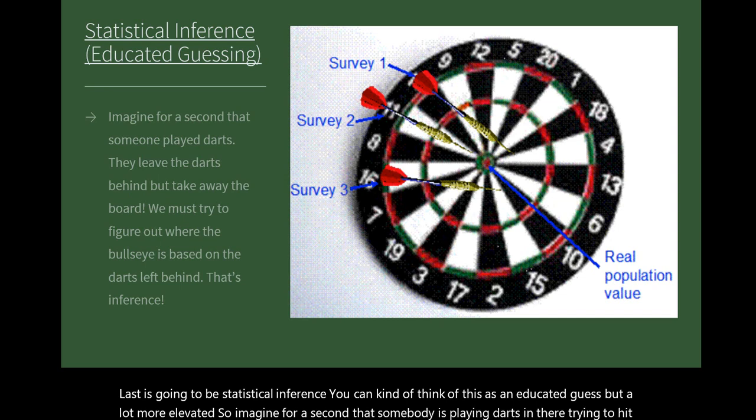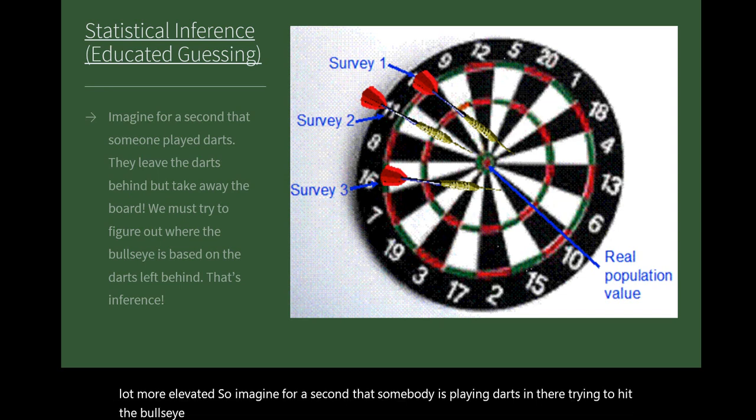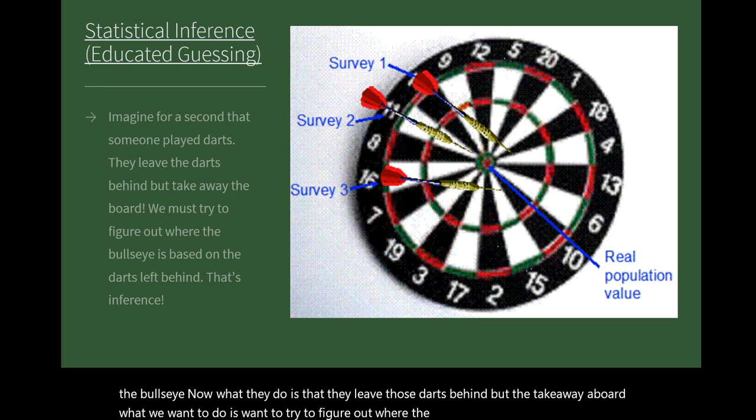Now what they do is they leave those darts behind but take away the board. What we want to do is try to figure out where the bullseye was based on where the darts are left behind. That's what inference is.